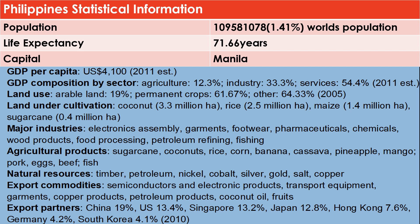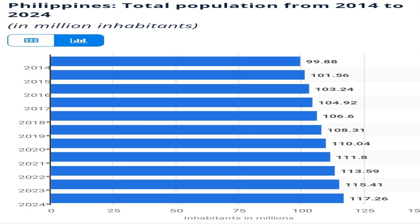We also have the total population of the Philippines from 2014 to 2024 as a predicted projection. For 2014, the population was 99.88 million, and for 2024, it is projected to be 117.26 million.